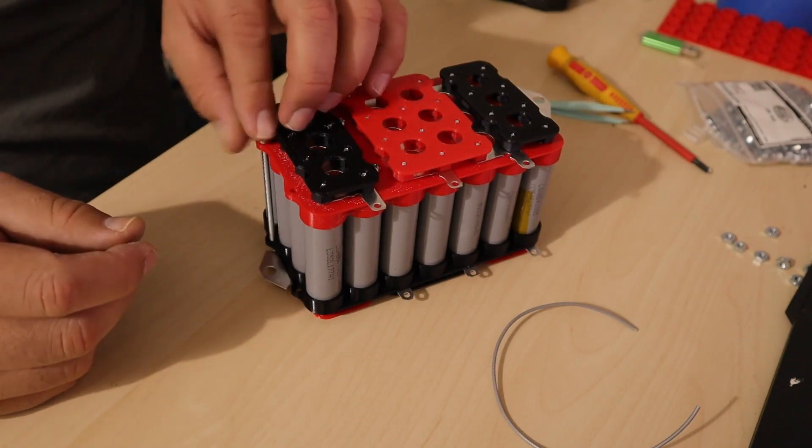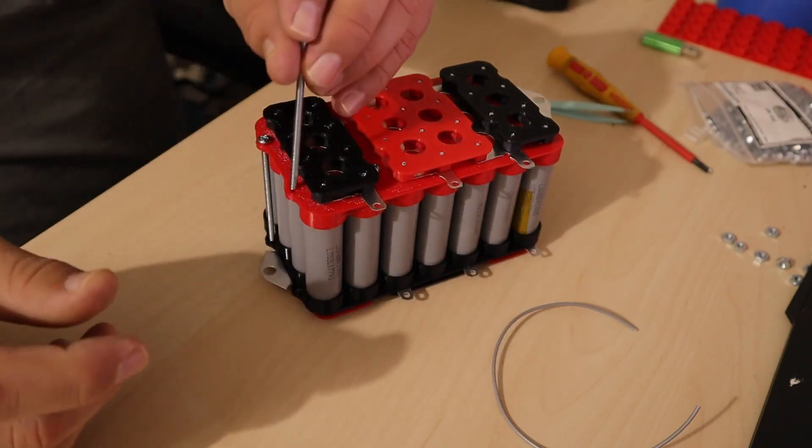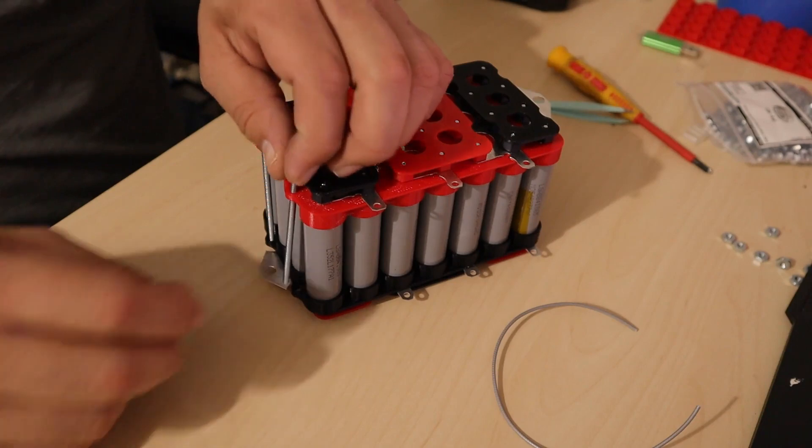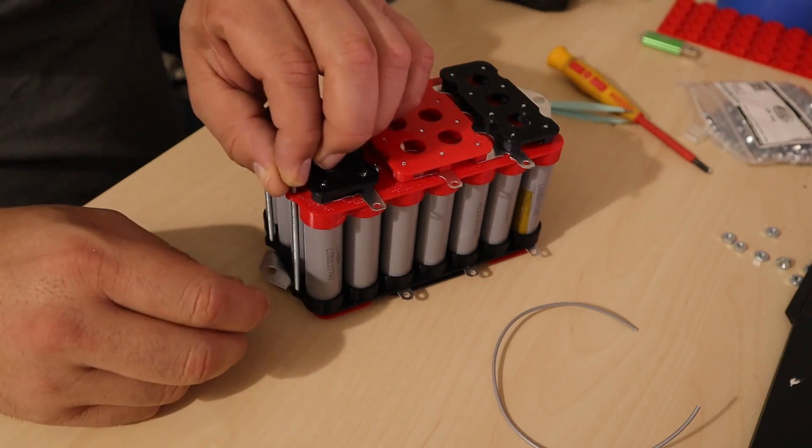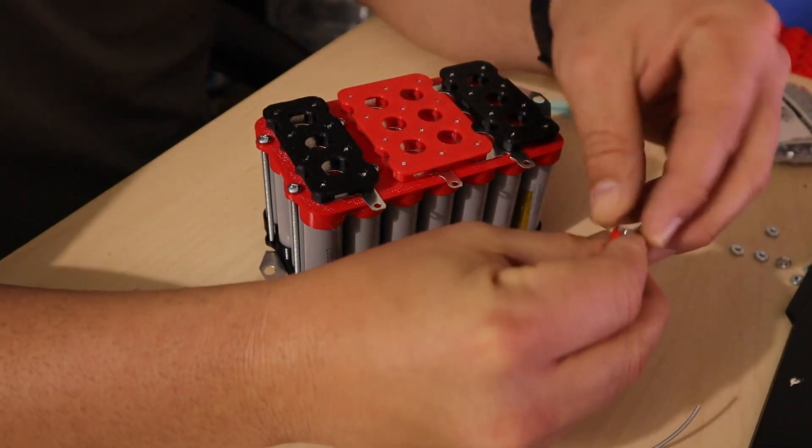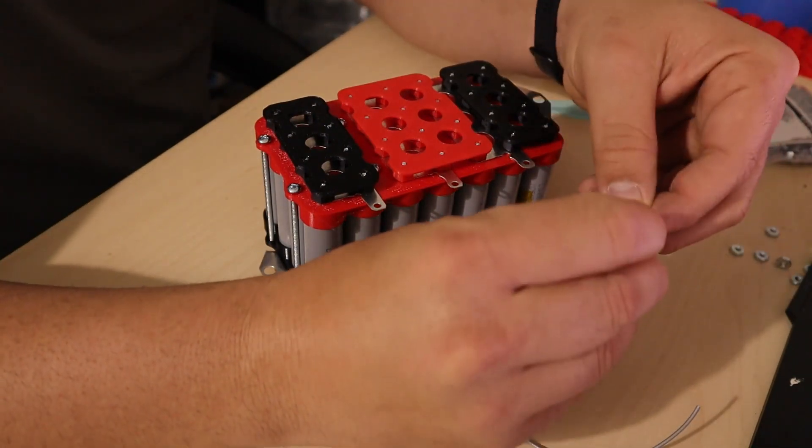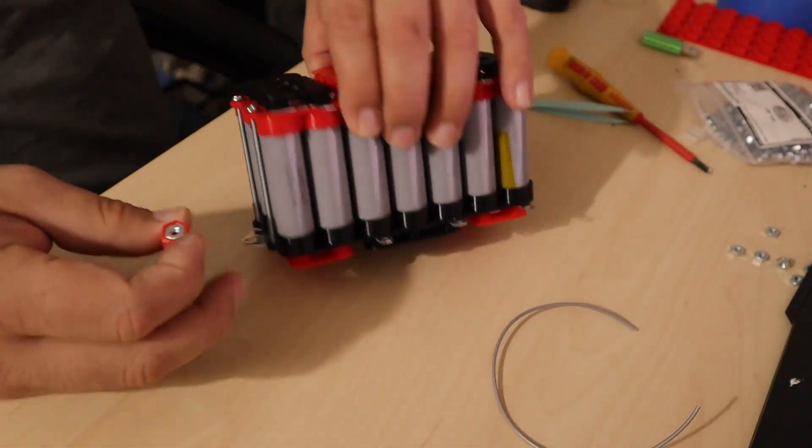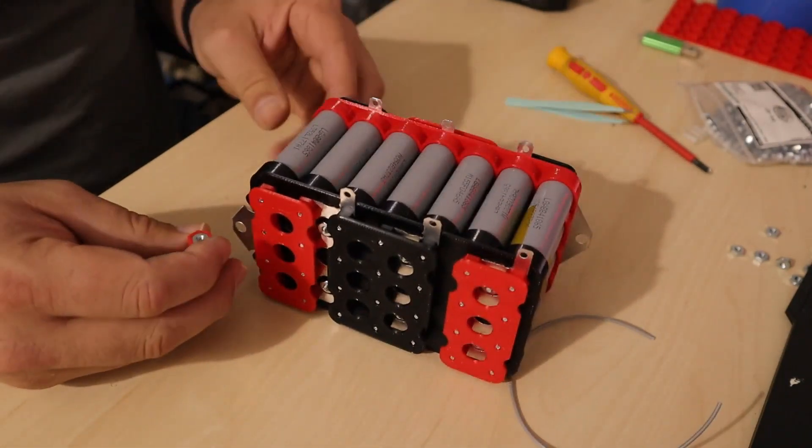Then we're going to place the final one. As you can see, this is where it makes sense to have a cutout on the terminal because it means that you're not going to short the battery. Just as you did with the first screws, you put a nut on it and do the final assembly with it.